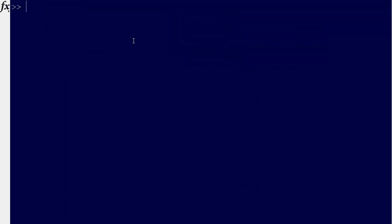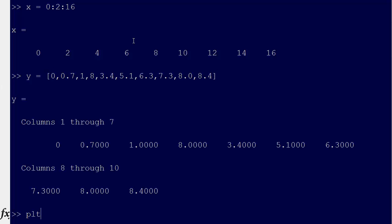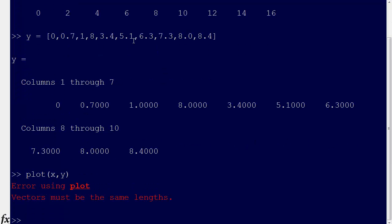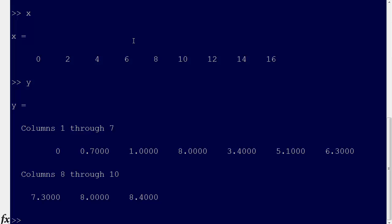So, our x values are going to go from 0 by 2s to 16, and our y values are going to go from, well, it's just t and x, but we can go x and y, where y values are going to be 0, 0.7, 1.8, 3.4, 5.1, 6.3, 7.3, 8.0, 8.4. Then we'll plot x, y.